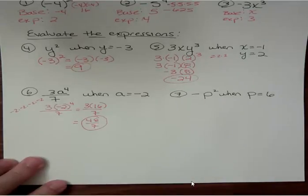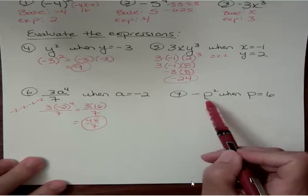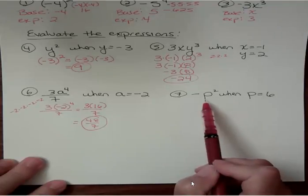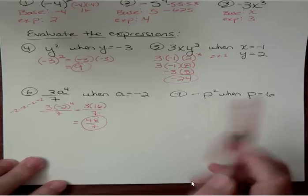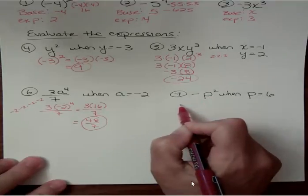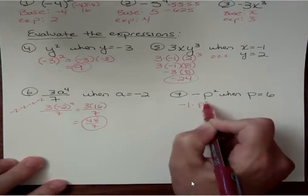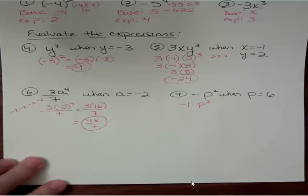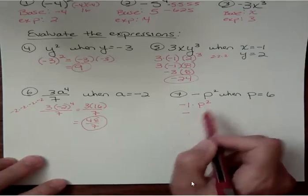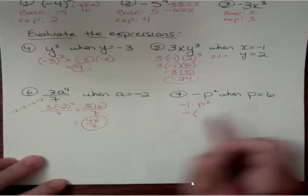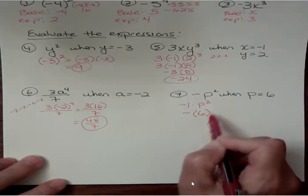Number 7, there's a negative out front and p squared. The base in this problem is p. That negative has nothing to do with that power. It's just hanging around out front. We could think of it as negative 1 times p squared. That would be the same thing, right? We don't show the 1, but it's just a negative that has nothing to do with the power. So I'm going to say negative, and then instead of p, I'm going to put parentheses around what p was, which is 6, to the second power.